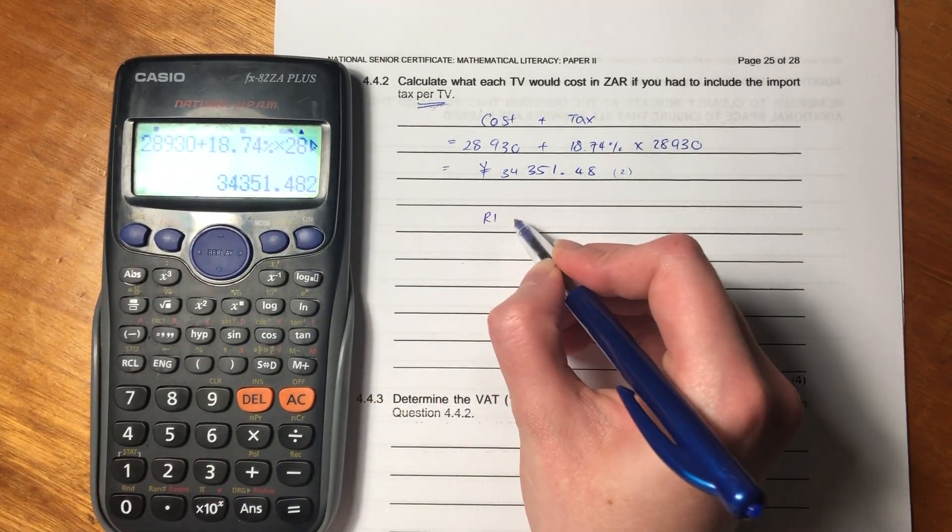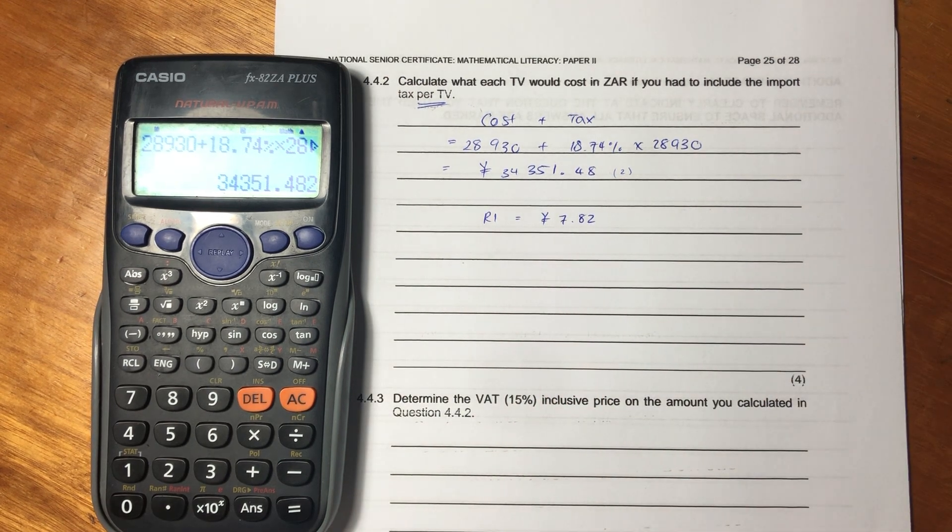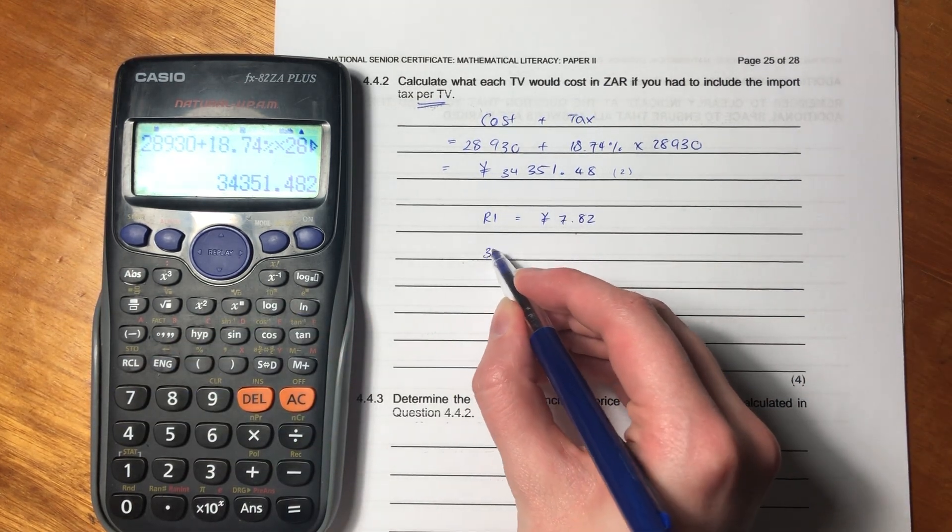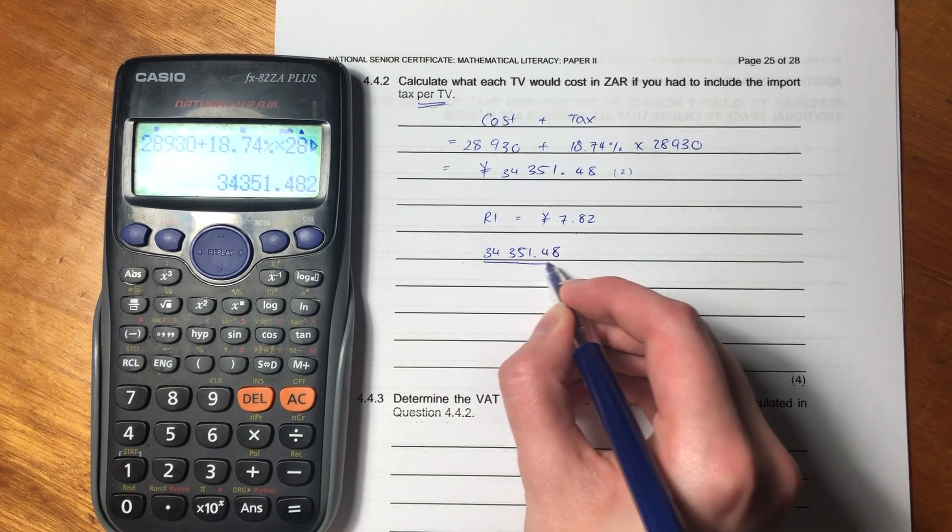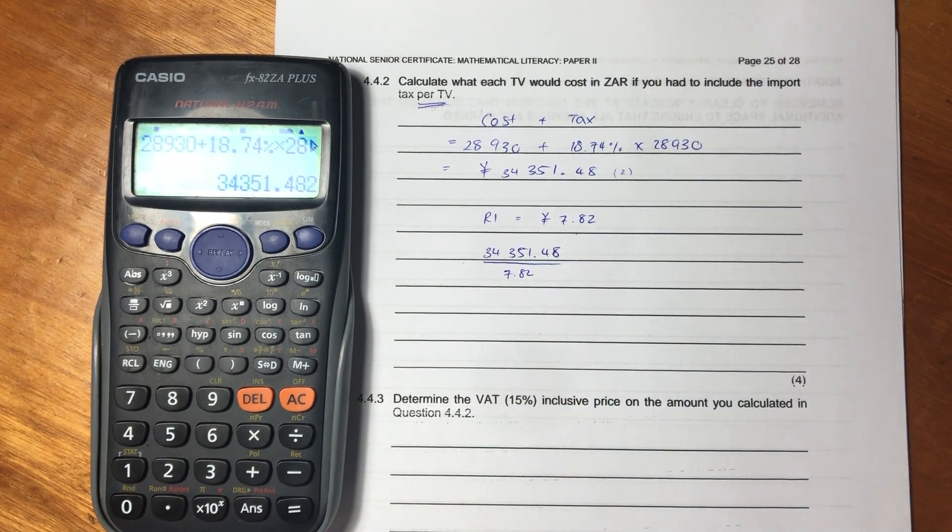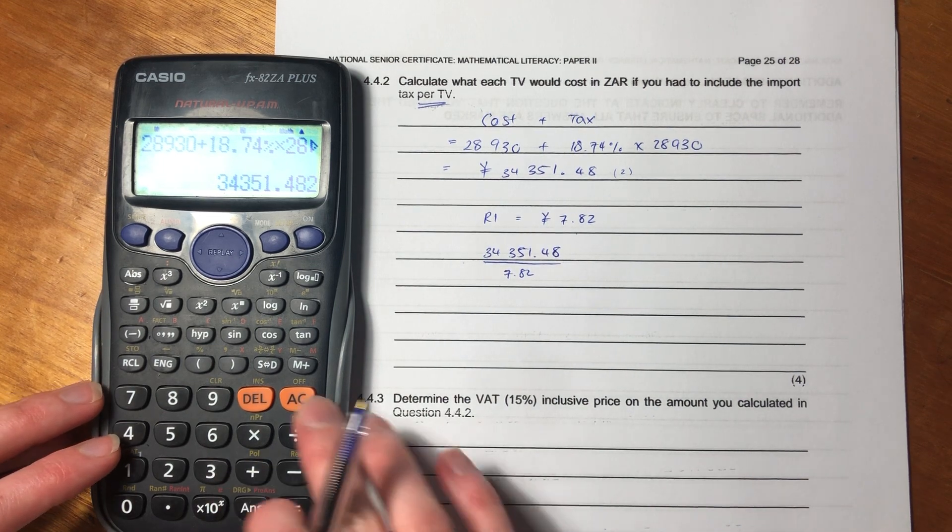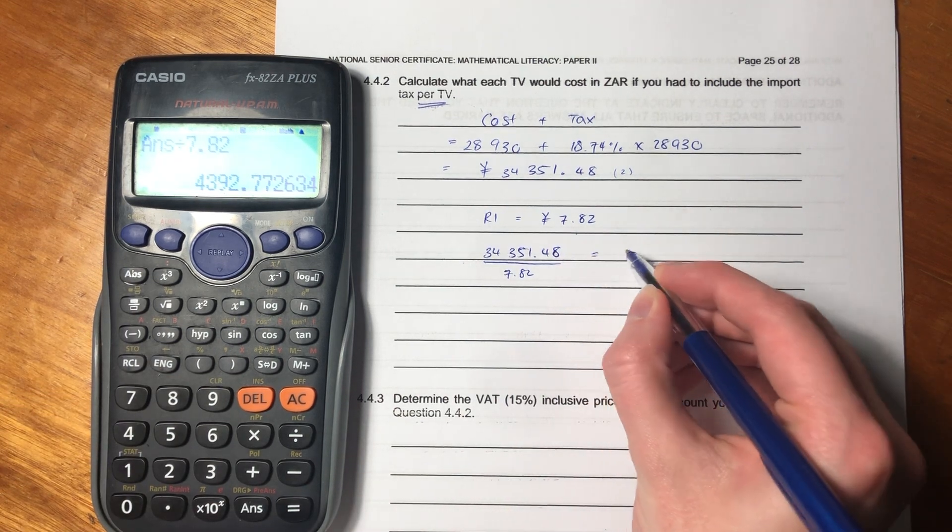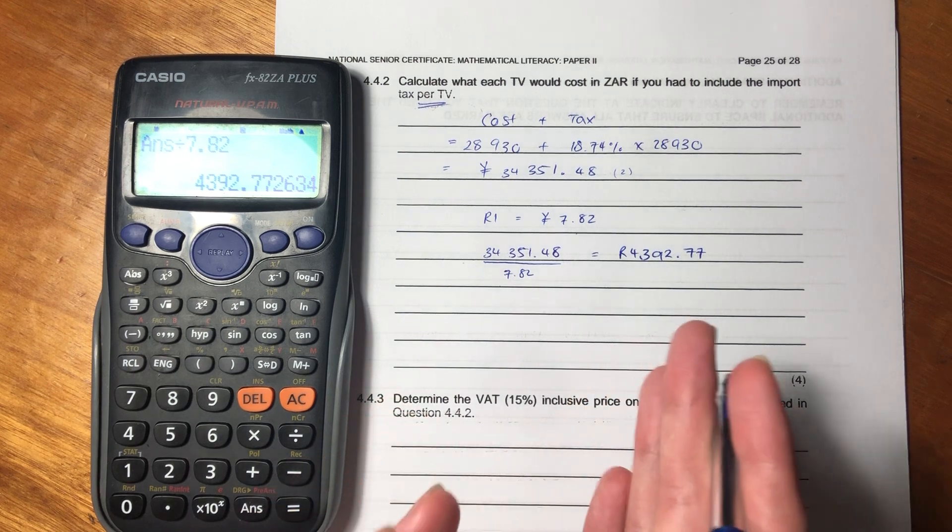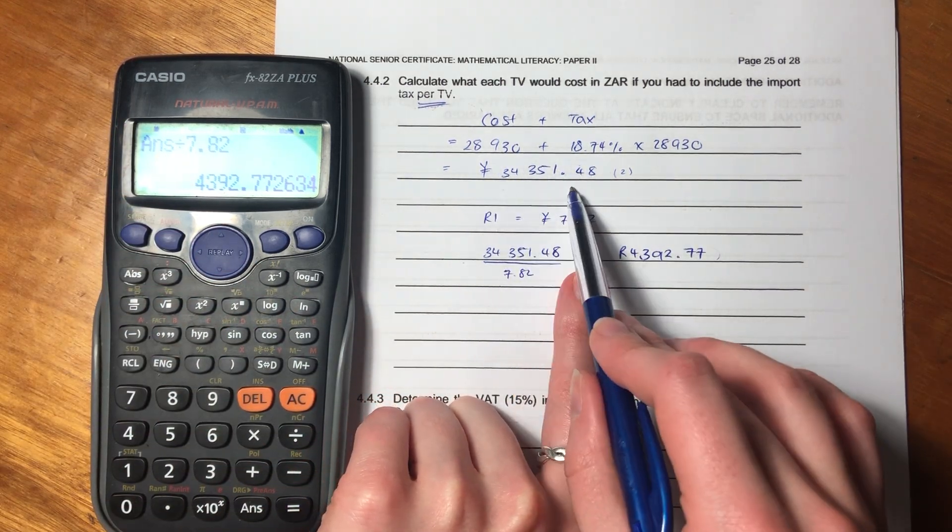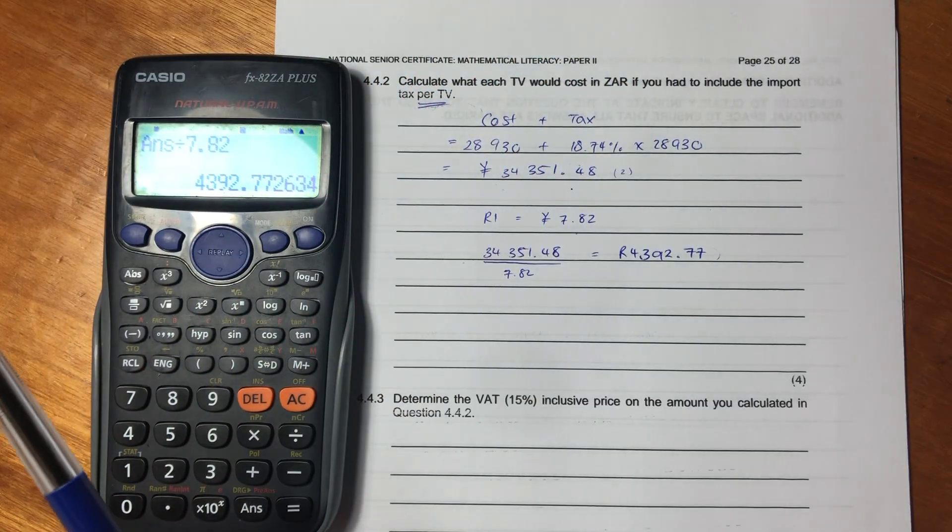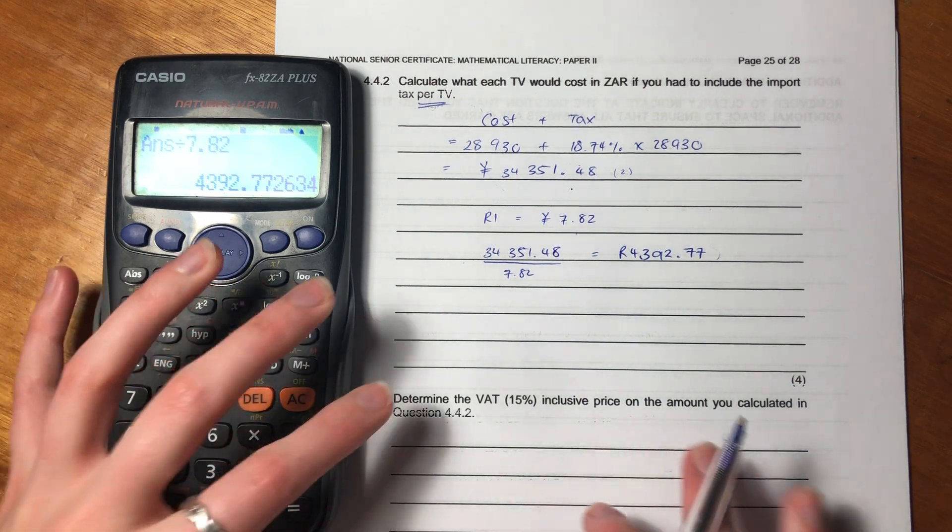But remember, 1 rand equals 7.82 yen. So we are going to have to divide this number by 7.82 for the same reason that I explained previously, because the rand is stronger. So it means that there will be, you'll pay fewer rands than you will yen for the same thing. So we would expect that the number of rands be less than the number of yen. So let's do the math here. And we get to, in rands, 4392.77 rand. And you see that this amount here in rands is less than the amount in yen. And that makes sense. Because we know that you pay fewer rands for something than you do when you have to pay in yen for the number because of the exchange rate. I hope that was helpful.